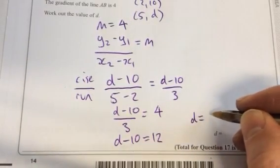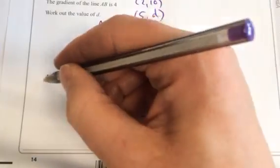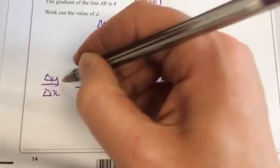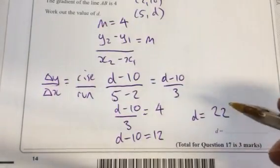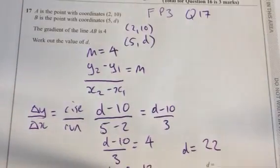So d will equal 22. Fantastic. So what you're seeing there is the change in y over the change in x to give us the gradient. Rather than being asked for the gradient, we have to solve for one of the coordinates.